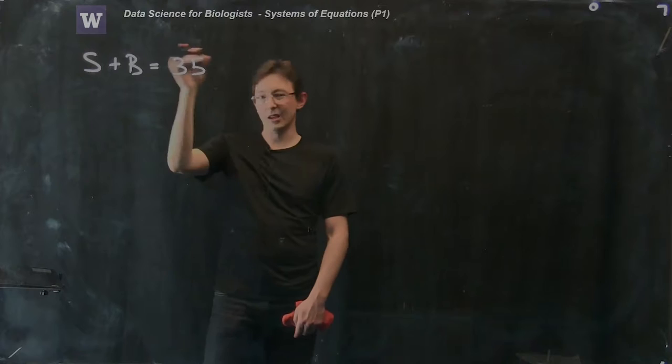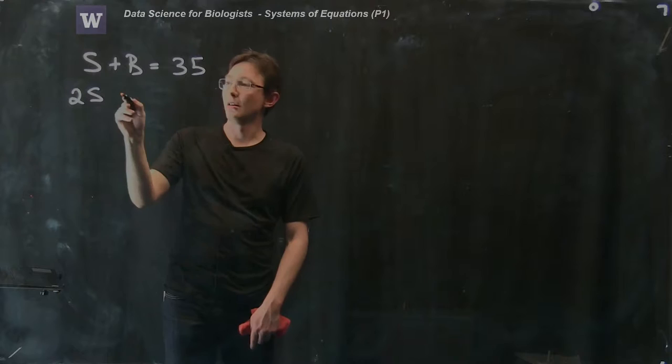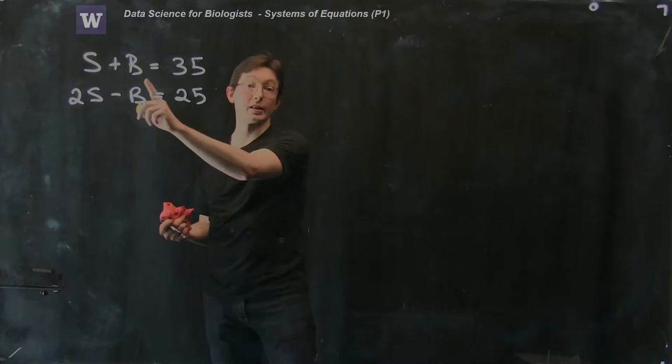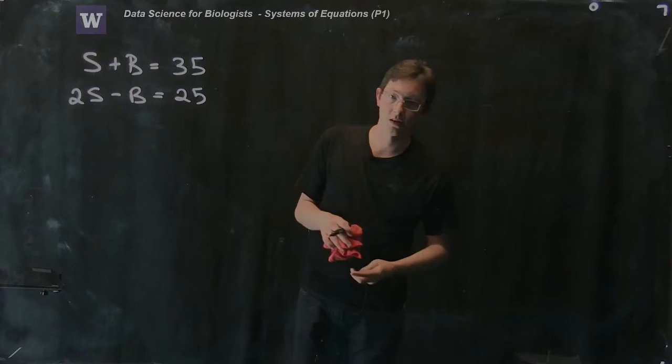I'm making stuff up. Sally plus Bob equals 35, and then for some reason maybe I have some other cryptic equation like two times Sally's age minus Bob's age is equal to 25. This is the kind of information that I might have given to me and I might want to solve for what is Sally's age and what's Bob's age, what's S and B in the system of equations.